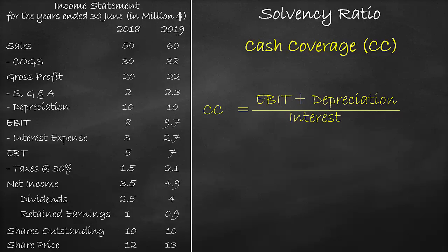Let's calculate the cash coverage ratio for the year 2018. EBIT is equal to $8 million plus depreciation of $10 million, divided by the interest of $3 million, which is all equal to 6 times.